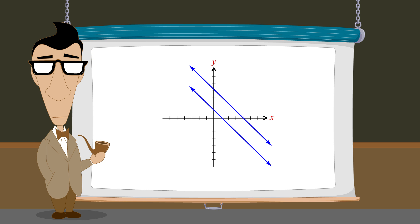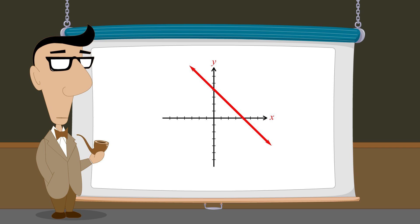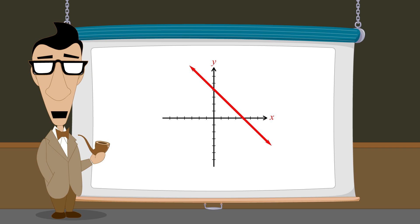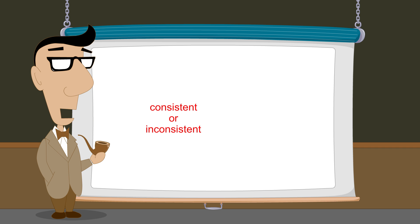The third possibility is that the two lines described by the equations are the same. In this case, the two graphs intersect at every point and the solution set contains an infinite number of solutions. These three types of systems are characterized by two attributes: the systems can be either consistent or inconsistent, and the equations in the system can be either dependent or independent.